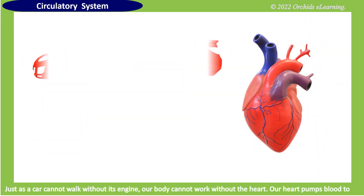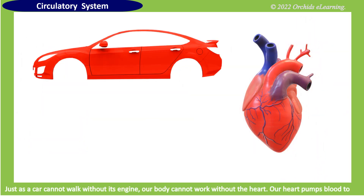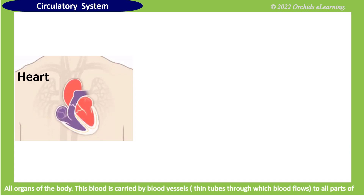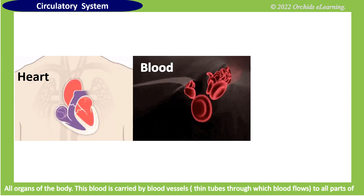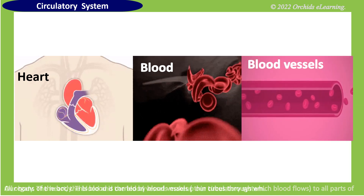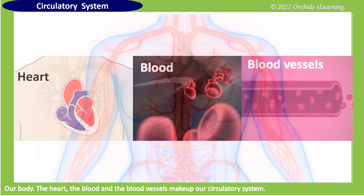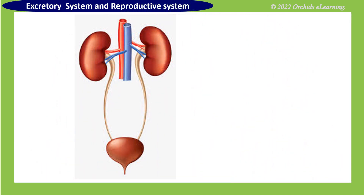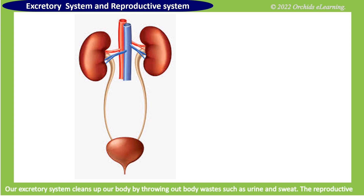Circulatory system: just as a car cannot work without its engine, our body cannot work without the heart. Our heart pumps blood to all organs of the body. This blood is carried by blood vessels — thin tubes through which blood flows to all parts of our body. The heart, the blood, and the blood vessels make up our circulatory system.